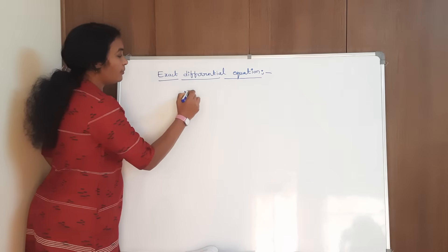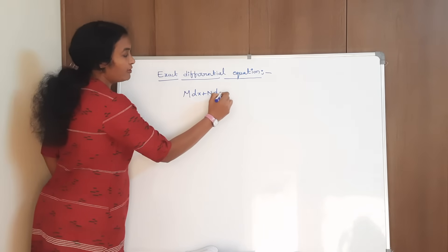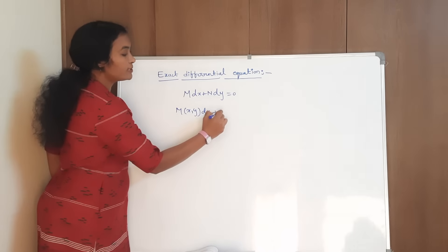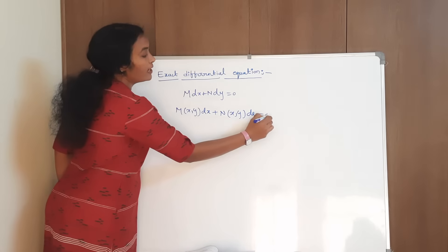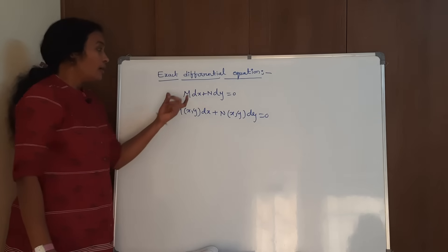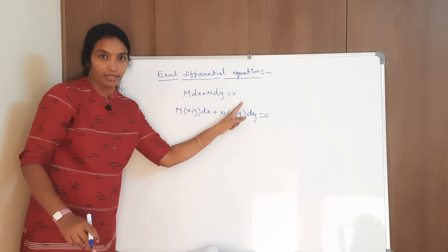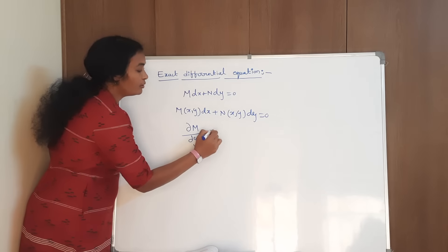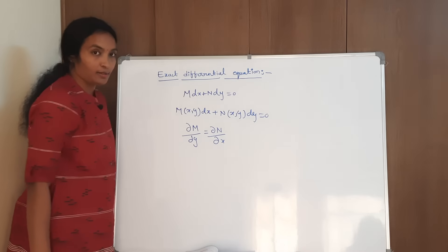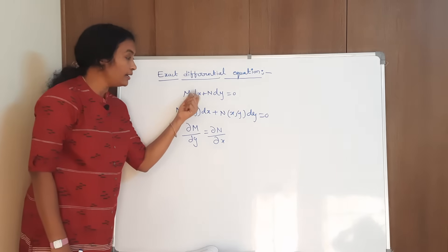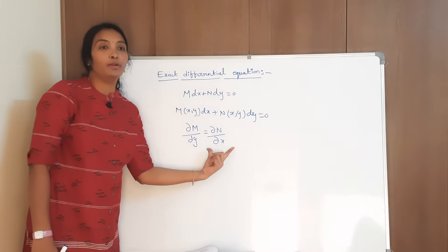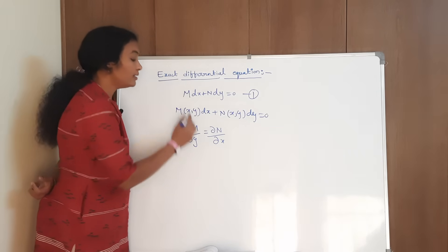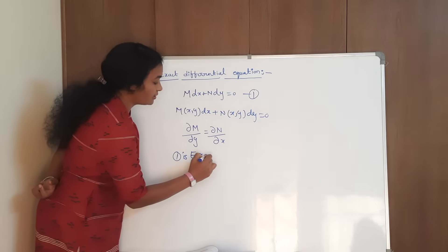First, suppose the equation is of the form Mdx + Ndy = 0. Or you can write it as M(x,y)dx + N(x,y)dy = 0. The equation is of the form Mdx + Ndy = 0, and this equation satisfies ∂M/∂y = ∂N/∂x. Suppose this is equation (1), and equation (1) satisfies this condition, then you can say that equation (1) is the exact differential equation.